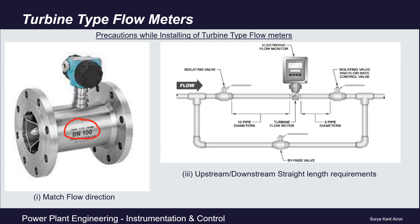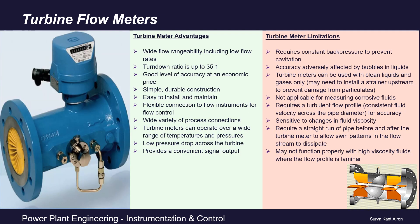Turbine type flow meters are widely used because of their wide flow range ability including low flow rates, and they have a very good turndown ratio of 35:1. Accuracy level is very good relative to their price, so at an economical price they provide very good accuracy. They have simple, durable construction and are easy to install and maintain, with flexible connection to flow instruments for flow control. They offer a wide variety of process connections and can operate in a wide range of temperatures and pressures, with low pressure drop across the turbine.